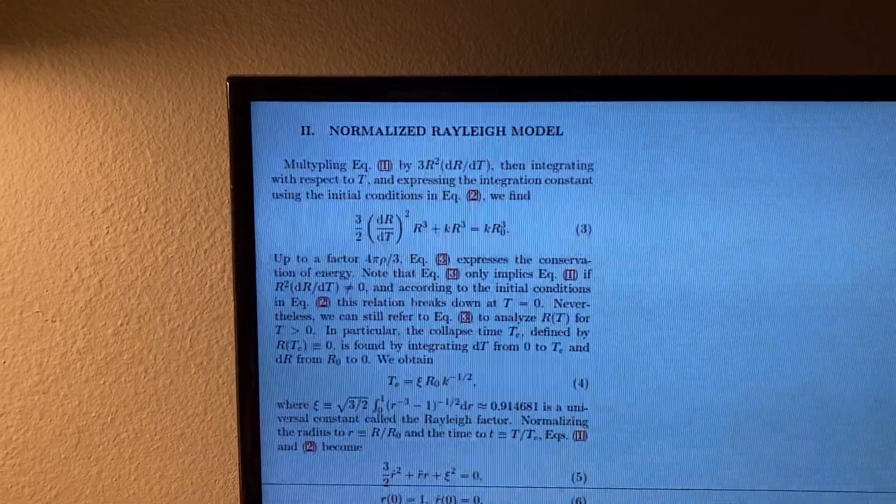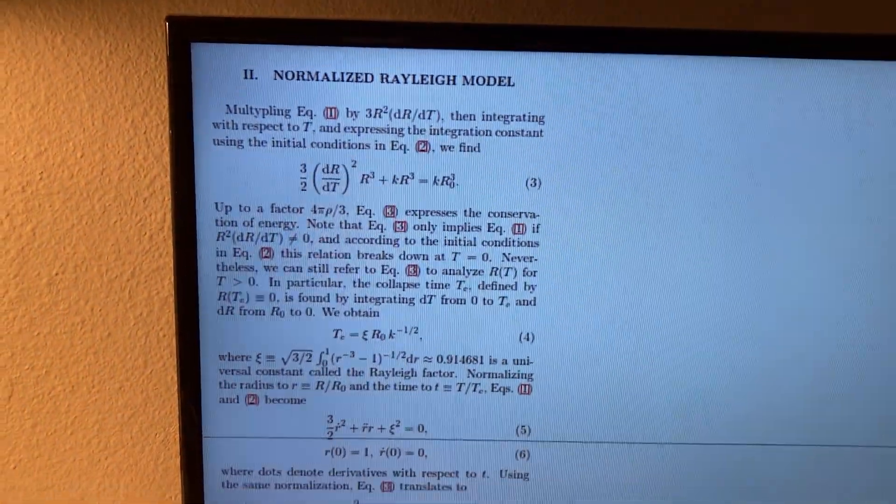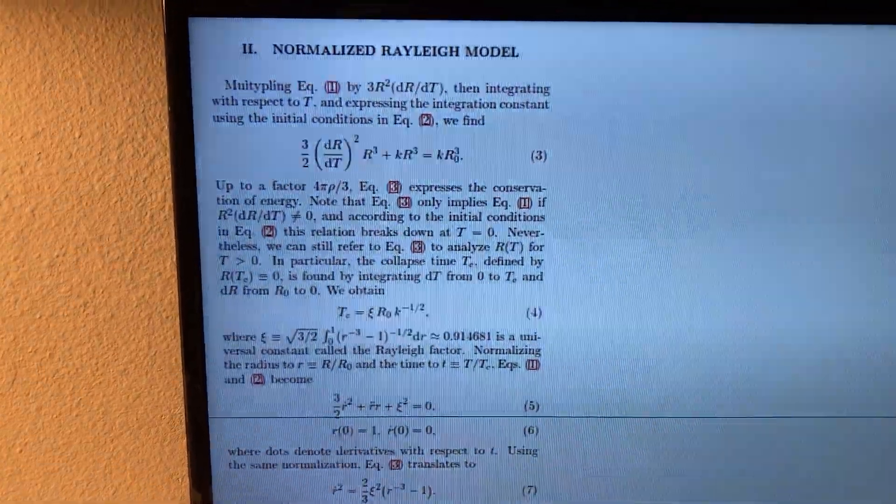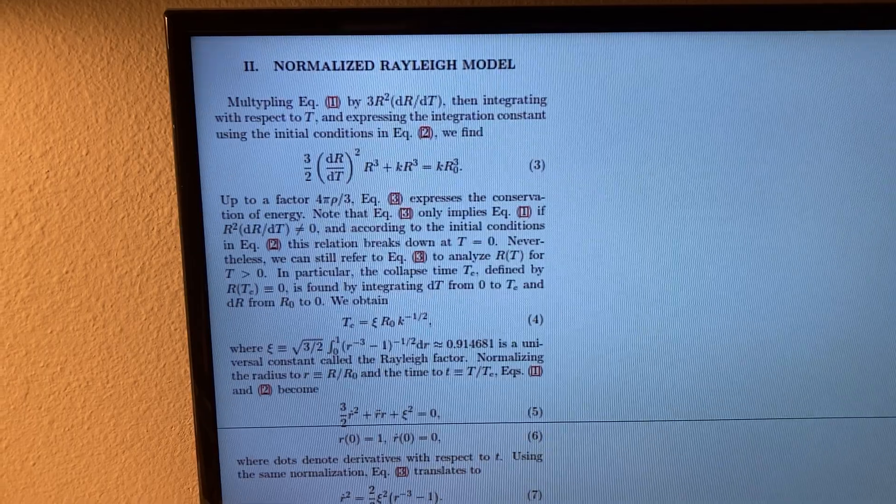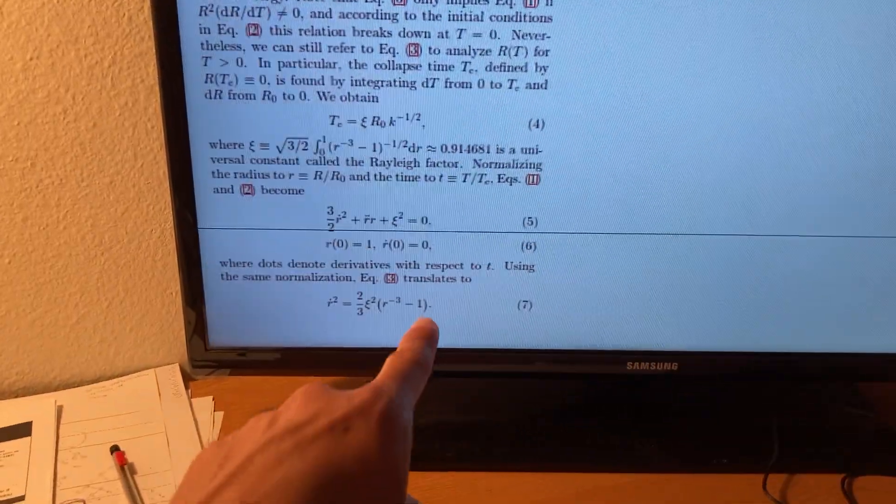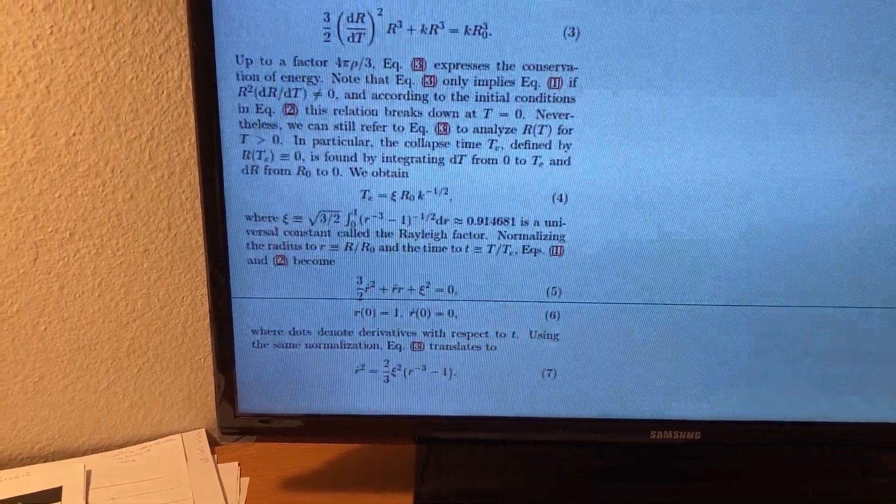After you substitute the normalized variables into the equation, you then multiply and integrate to get the equation for the first derivative squared, which you see over there, in terms of r.